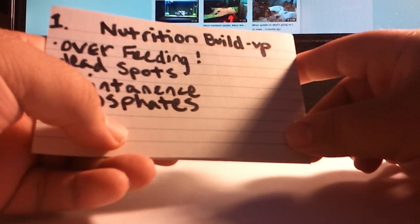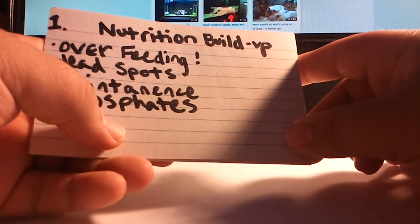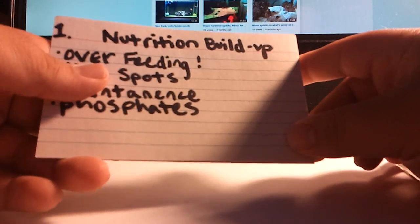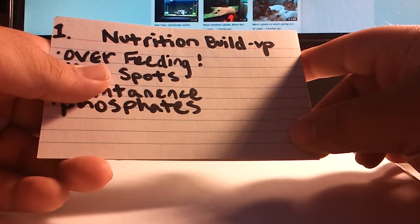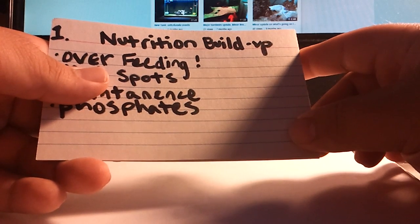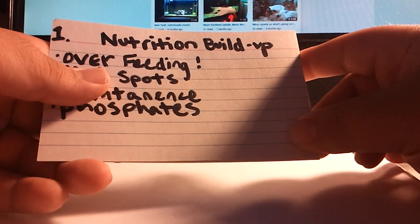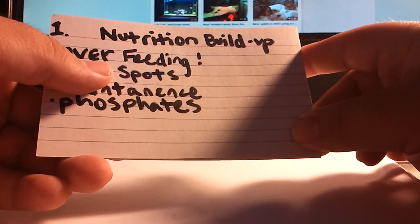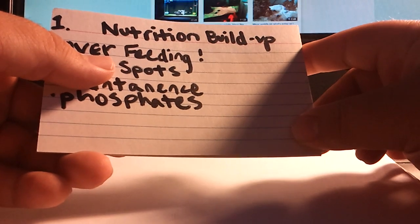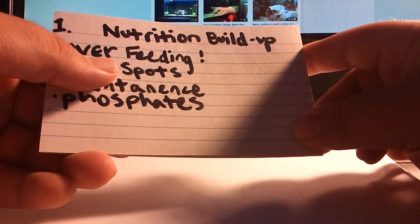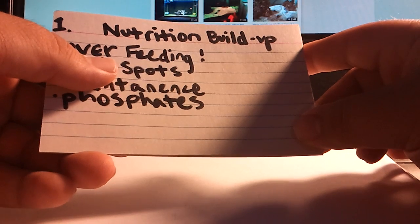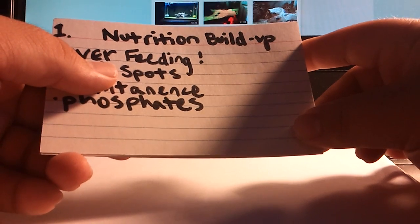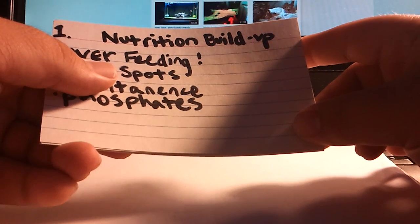The first problem that causes cyanobacteria is nutrient buildup. What I mean by this is first of all overfeeding. This could be really easy to do and I know I've done it before. Just make sure that you feed enough for each fish to get what it needs and that's it, nothing more. Don't feed a little bit extra just because you think they're still hungry.